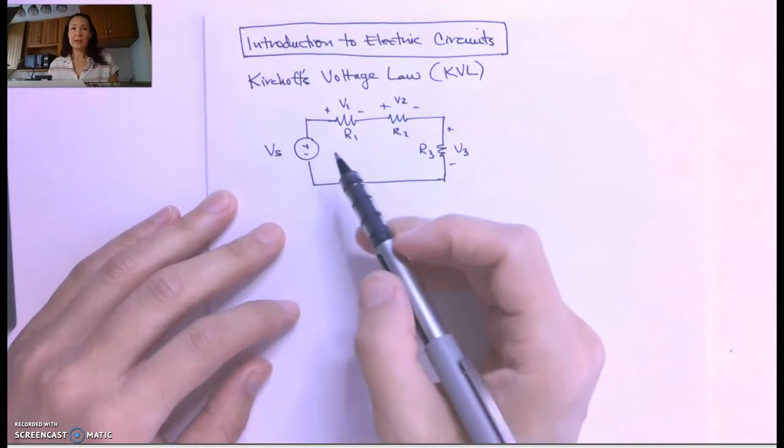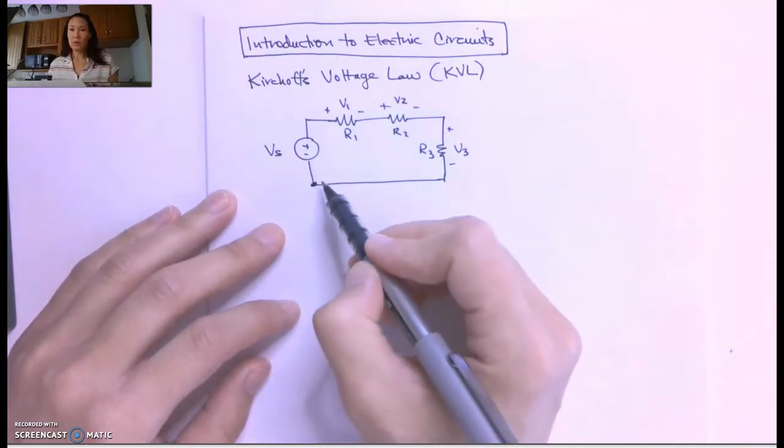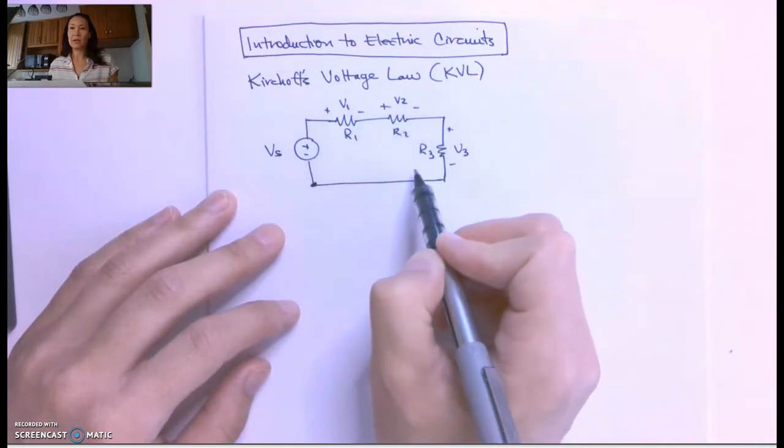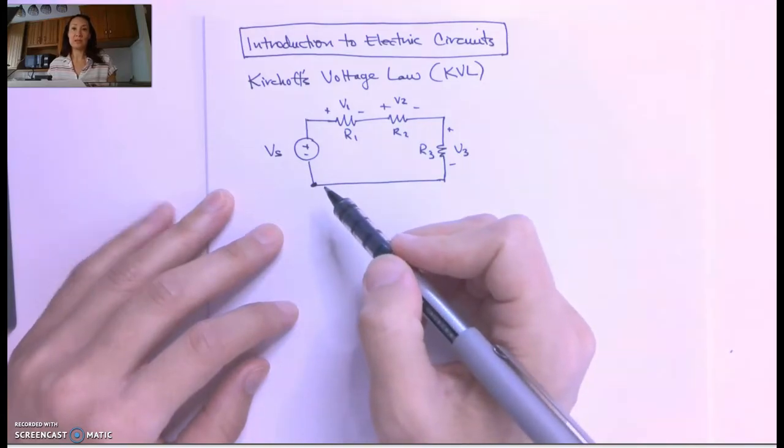So KVL tells us that if we start in one place in the circuit, it can be anywhere, and we walk around any loop in a circuit, the sum of voltages around that loop will be zero.